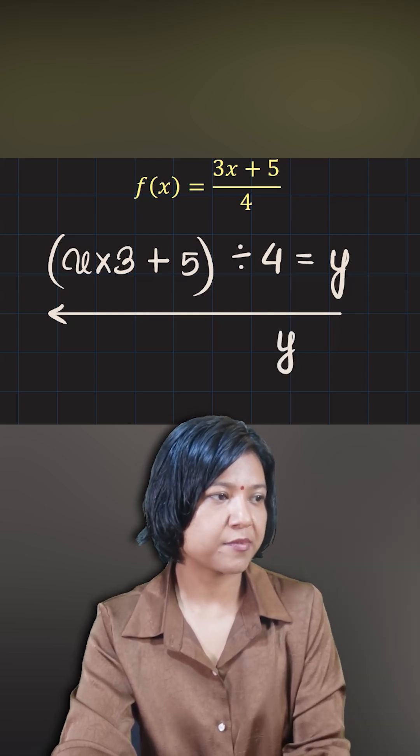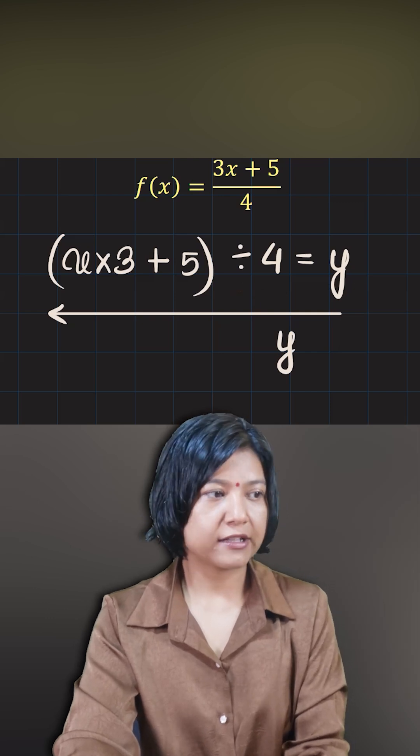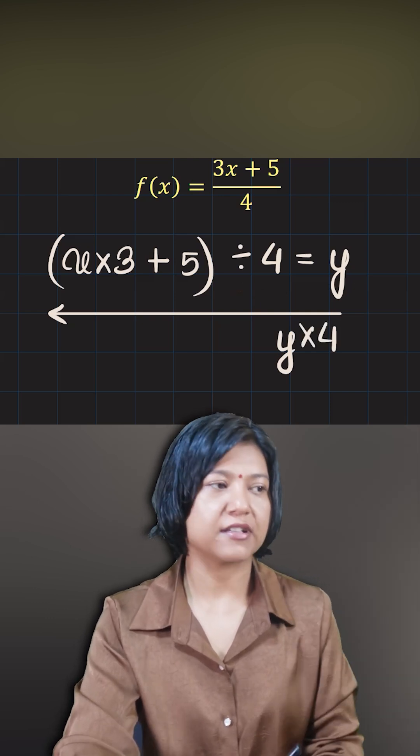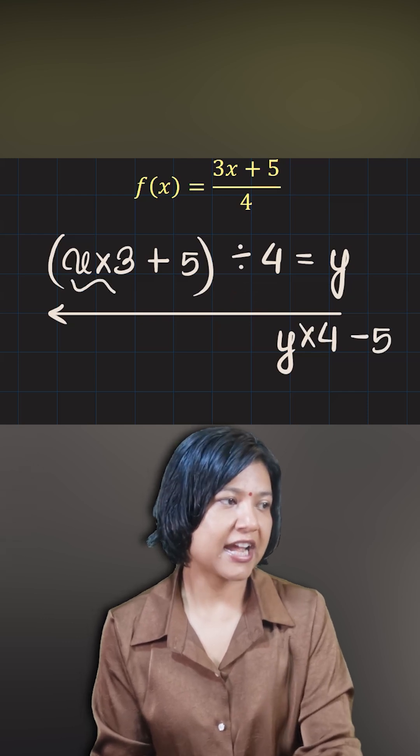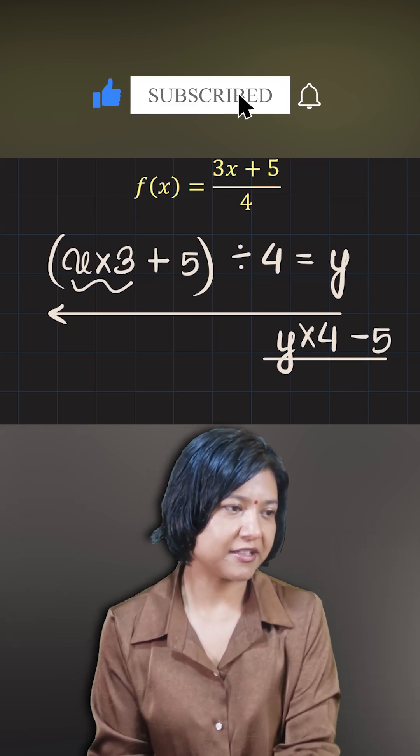So divided by 4 can be written as times 4, now because that's the opposite of division. And now plus 5 will become minus 5, and then times 3 becomes divided by 3, very simple.